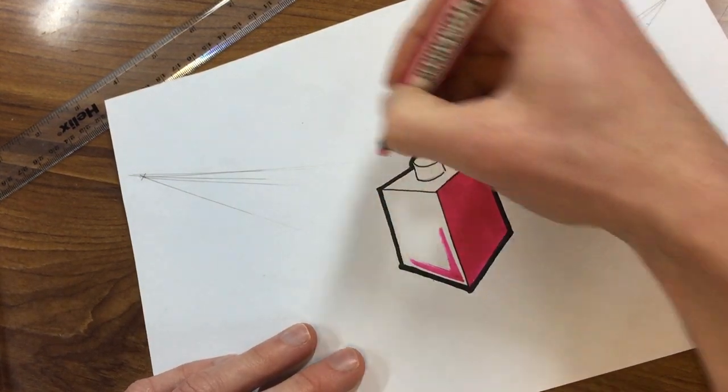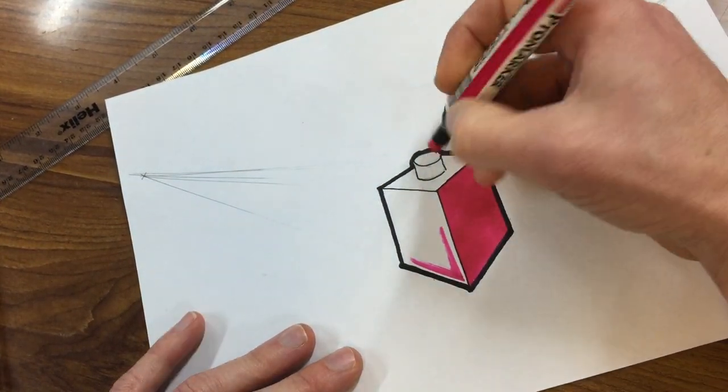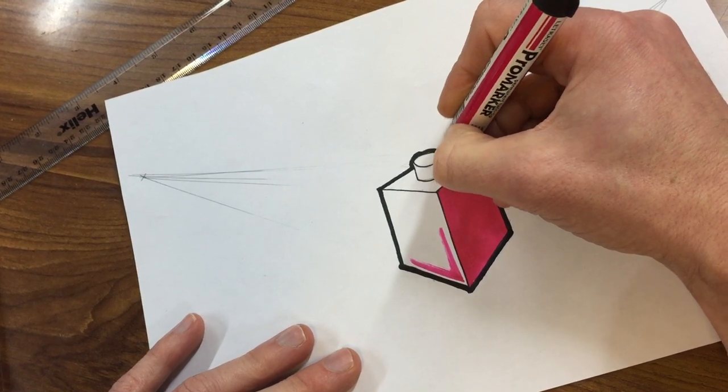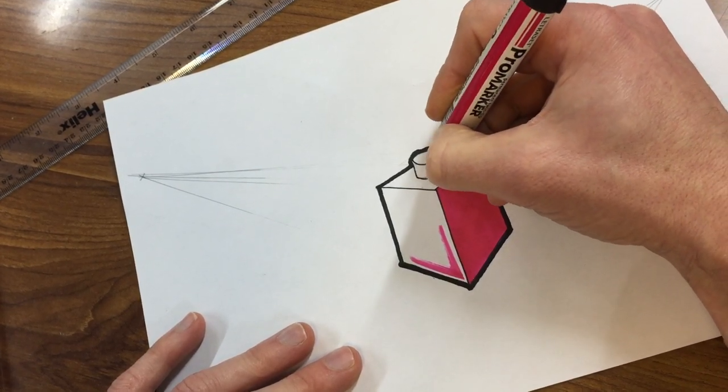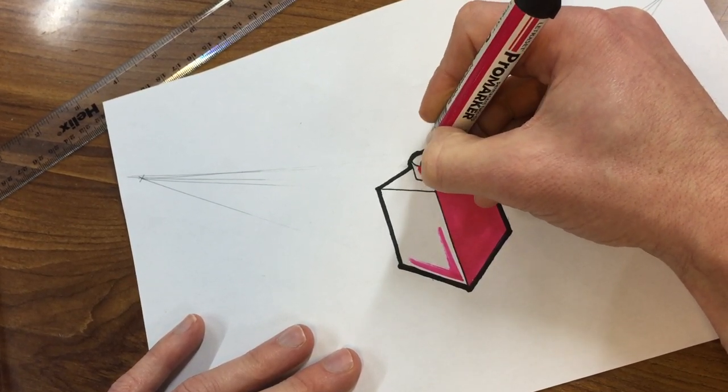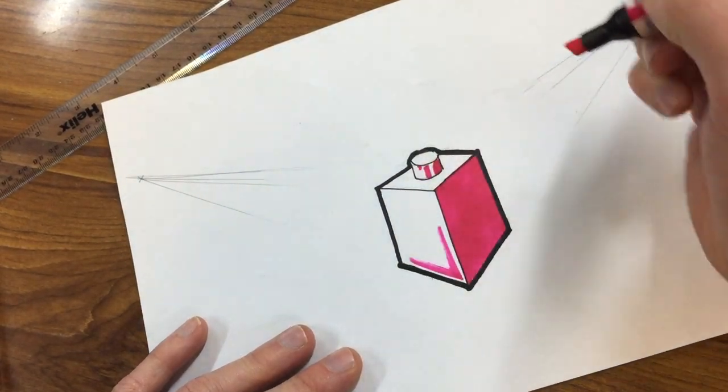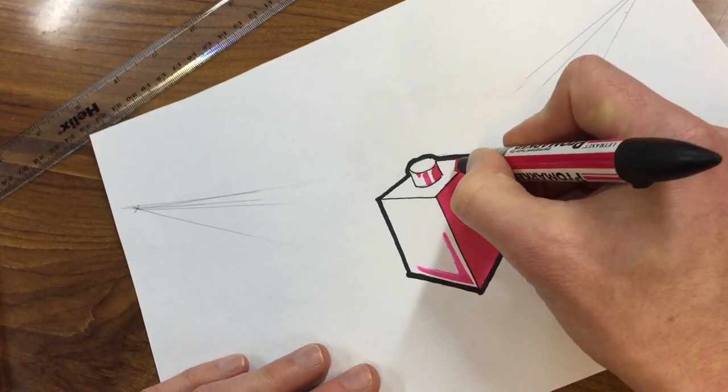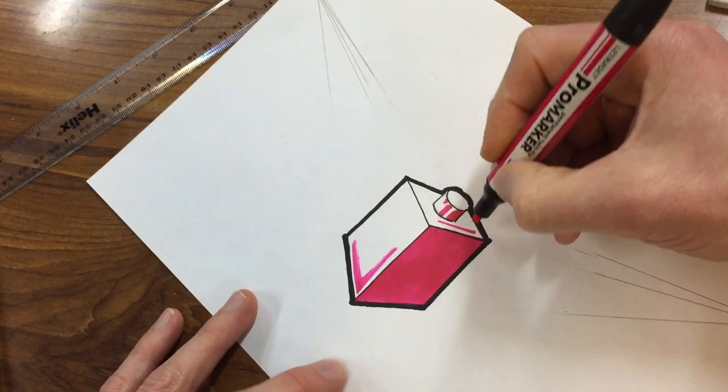On a cylinder, imagine the light's coming from this direction—one side would be quite dark. And then you might get the odd bit of white where the light's hitting it. I'm just going to add some lines here as well.